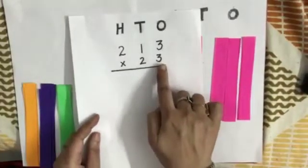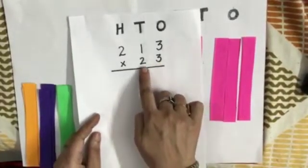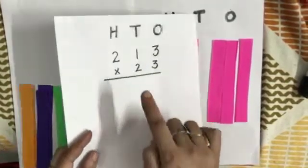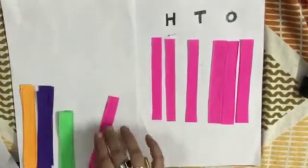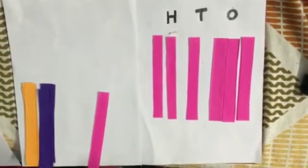We have to multiply it by 23, so 3 ones and 2 tens. First of all, we will use the tens column. We will use green sheet for that. We will write 2 tens.